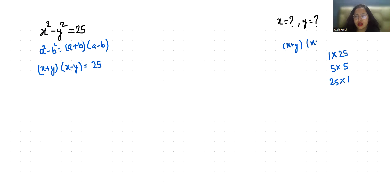Now we have x plus y and x minus y, and since x plus y is greater than x minus y, the pair 1 and 25 is not possible for that order. The pair 5 and 5 works, and 25 and 1 also works since 25 is greater. So there are two possible cases.